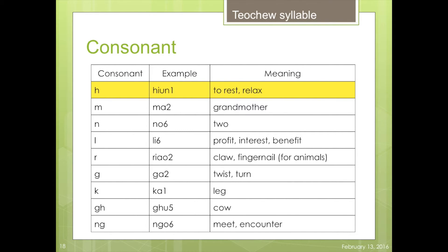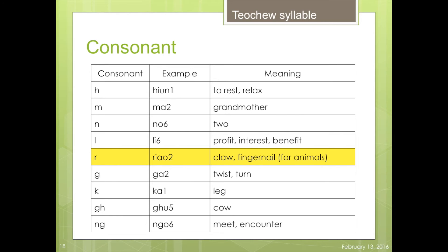OI, for example, 'you' is meaning to rest or relax. OI, for example, 'ma' is meaning grandmother. The example, 'nở' is meaning number 2. The example, 'lỉ' is meaning profit, interest or benefits. The example, 'dâu' is meaning cloud, fingernails for animals.